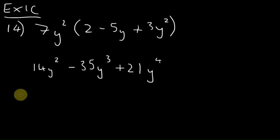It's normally sort of conventional to write the highest indices first. So that would be 21y to the fourth, and that is minus 35y cubed, and that is plus 14y squared. Doesn't matter which way though. Okay, you'll get marked correct either way.